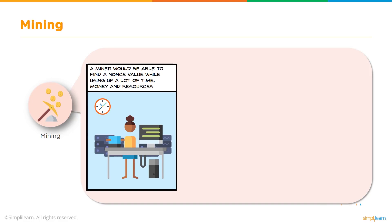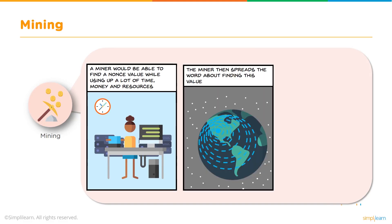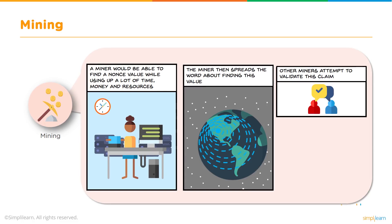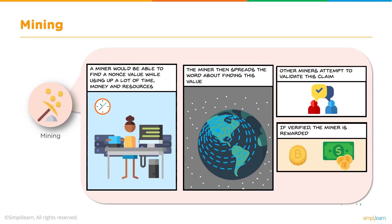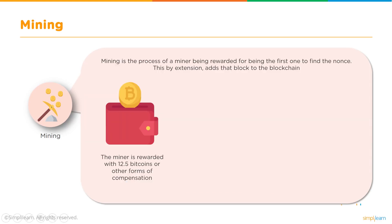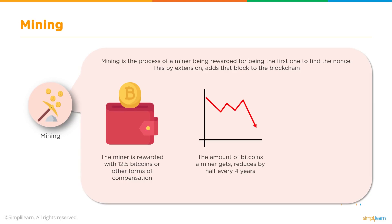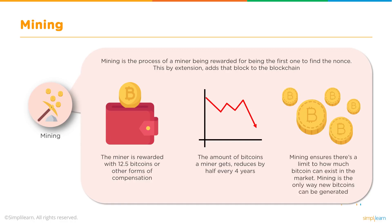A miner would find a nonce value while using up a lot of time, money, and resources. The miner then spreads the word about finding this value, and other miners attempt to validate the claim. Only if verified by other miners does the miner get rewarded. Mining is the process of a miner being rewarded for being the first to find the nonce. As of today, a miner is rewarded with 12.5 bitcoins. This reward gets halved every four years due to Bitcoin's limited supply. Mining is the only way new bitcoins can be generated.